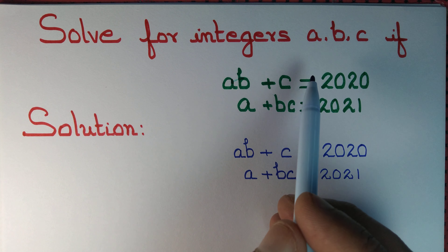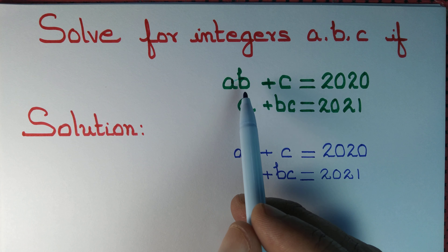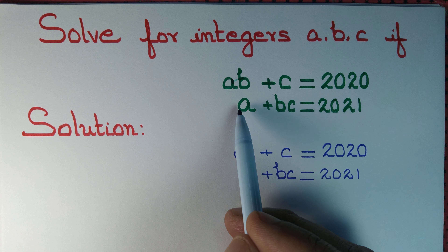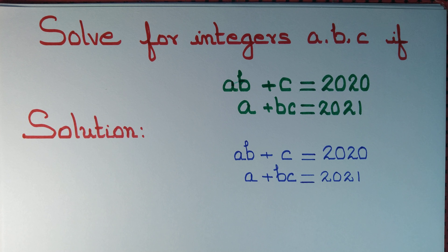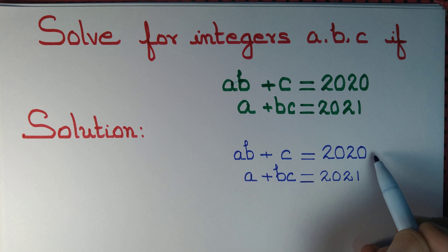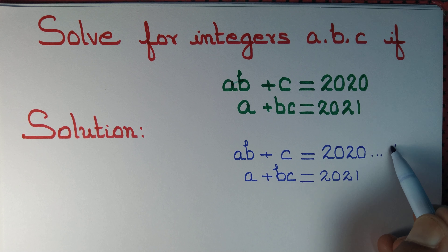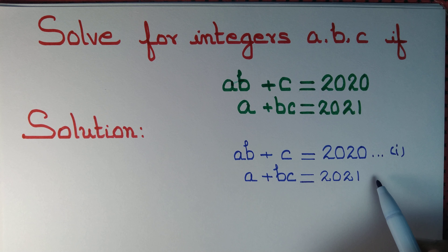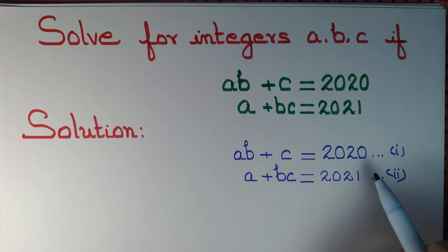Let us determine all the integers a, b, c such that ab + c = 2020 and a + bc = 2021. We want to solve these two equations: ab + c = 2020 (equation 1) and a + bc = 2021 (equation 2).